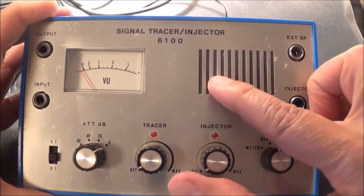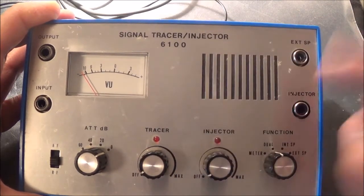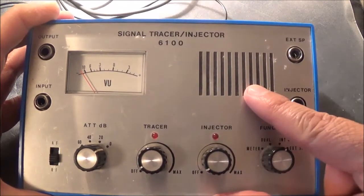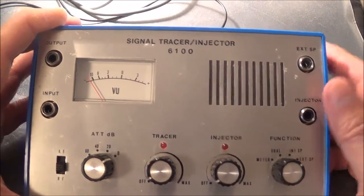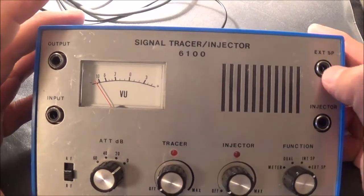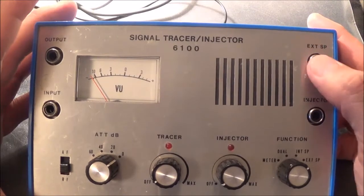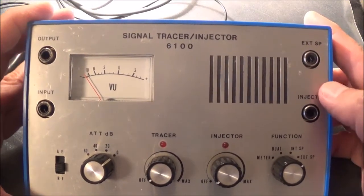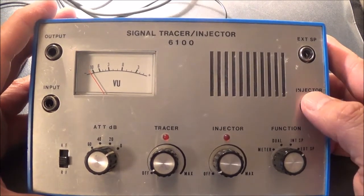You can have dual, which means sound coming out of the speaker and the VU meter, or just the internal speaker. Here you can hook up an external speaker, an 8 ohm external speaker, which could also be used to test a speaker.